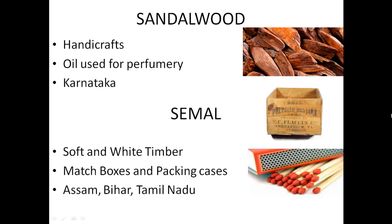Other species found in tropical deciduous forest include Sandalwood — one of the most important and costly woods in India and internationally. There are two types: white sandalwood and red sandalwood. It is primarily used in making handicrafts, oil, perfume, and cosmetics, and is mainly found in Karnataka. Semel is another important species — as seen in this picture of a tea chest, such boxes are made from Semel wood. It provides soft, white timber used for making matchboxes and packaging cases, and is mainly found in Assam, Bihar, and Tamil Nadu.